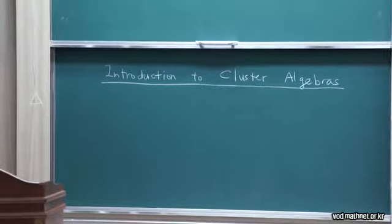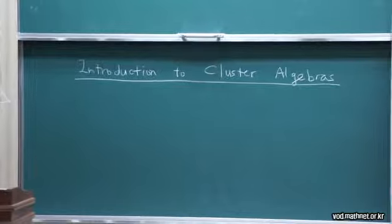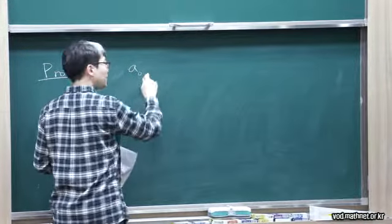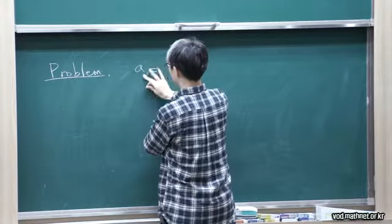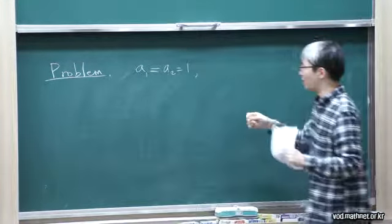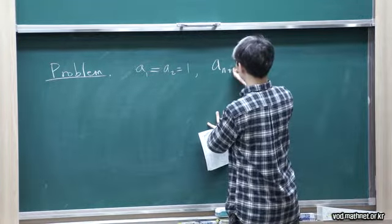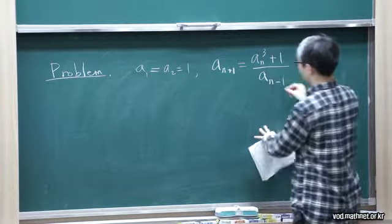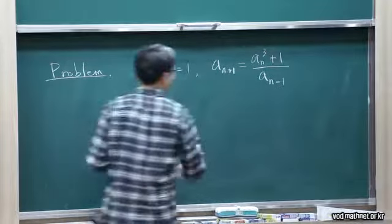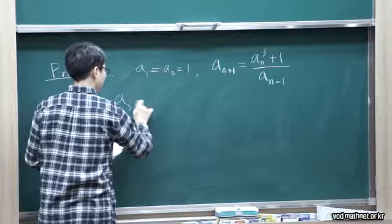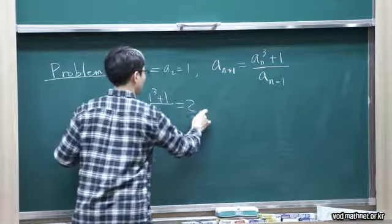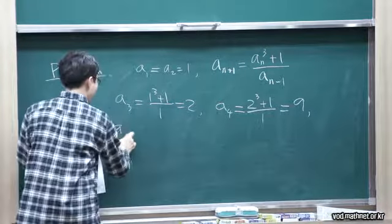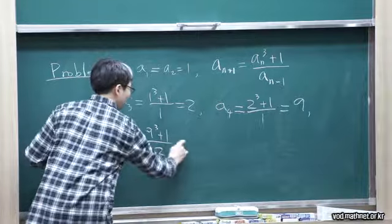Let me give you an interesting problem first. I'm going to define an integer sequence. So a1 is 1, a2 is 1. And then recursively I will define the rest of the sequence using the following recursive definition: a_{n+1} = (a_n^3 + 1)/a_{n-1}. You compute the next entry would be 2, and a4 would be 9.